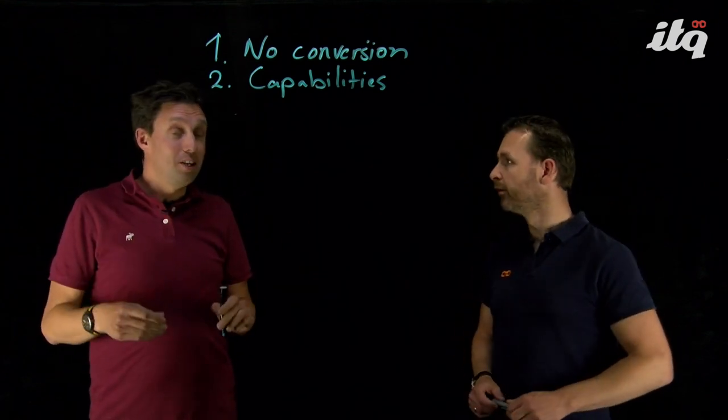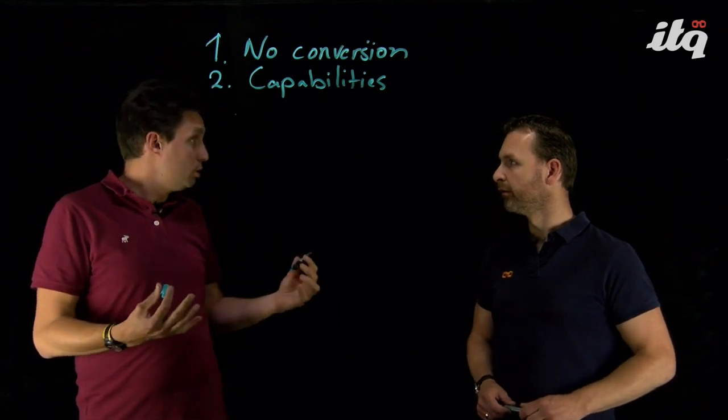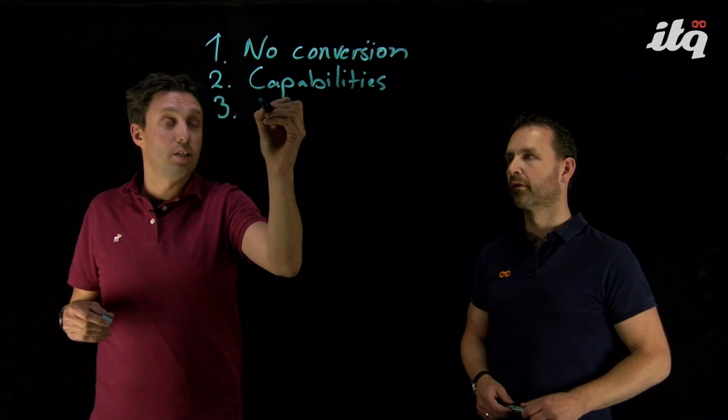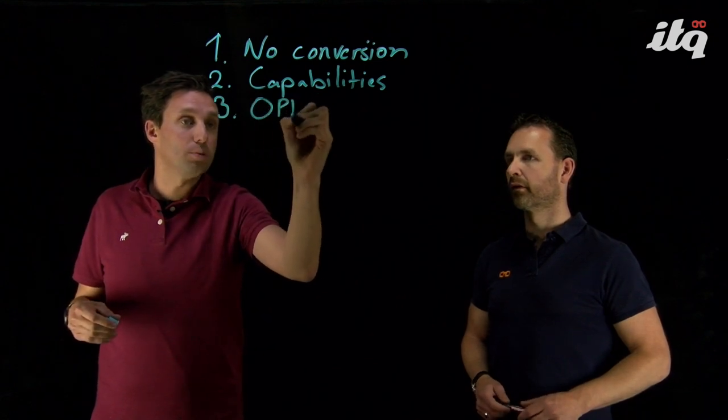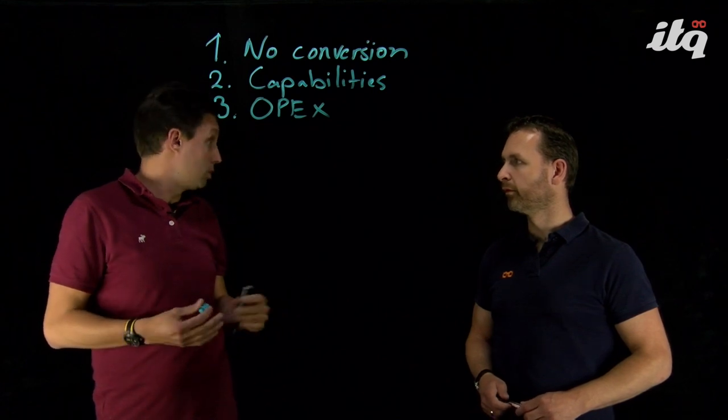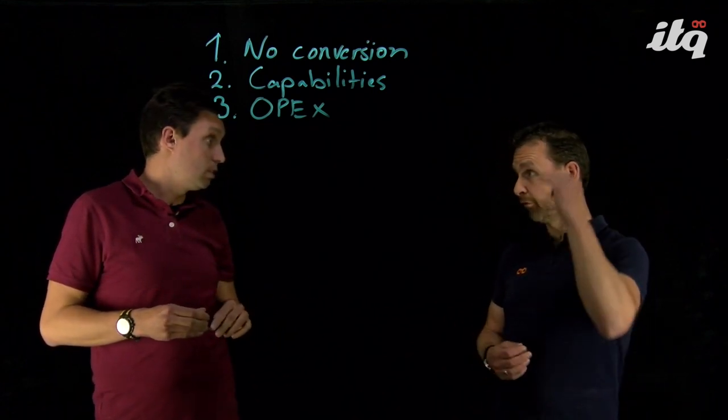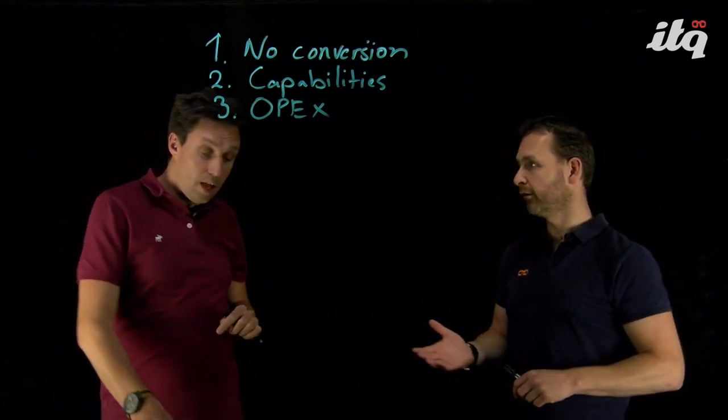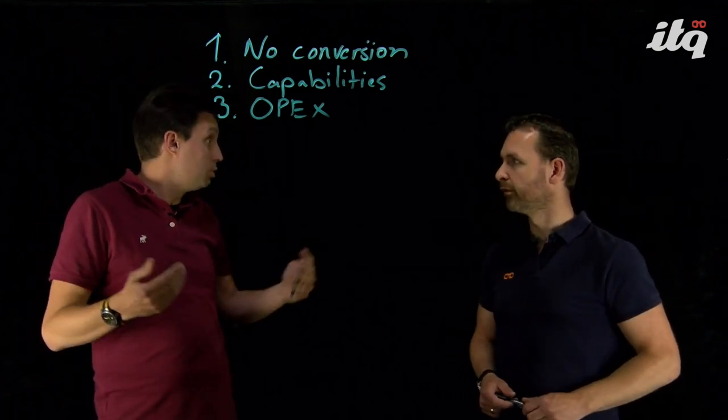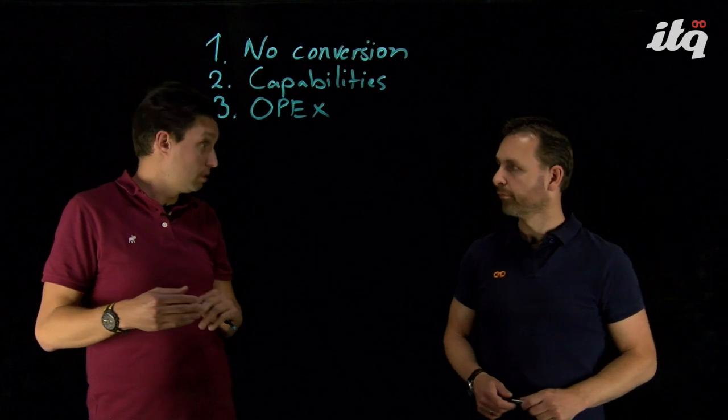A third important reason to use VMware Cloud on AWS is that you can consume the service in an OPEX model. It's a service, so you just pay for what you're using. And it's on the VM level or on the host level? It's on the host level. So you're paying for the number of hosts you're using.